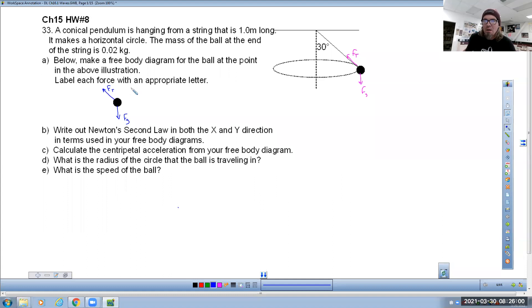That was question letter A. Letter B says write out Newton's second law in both X and Y directions in terms of your free body diagrams. So I'm going to break up FT into its X and Y components. For part B, I will put that in the X direction F net X is just FT X. And in the Y direction, F net Y is FG minus FT Y. It doesn't matter what order you put those in because it's equal to zero anyway.